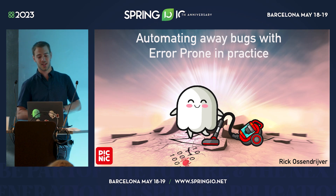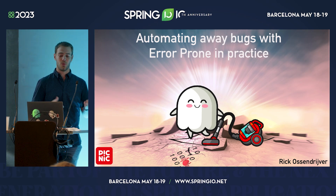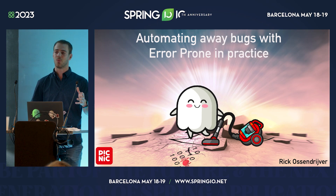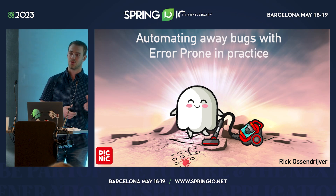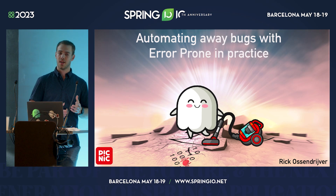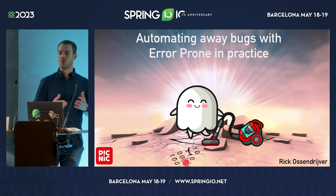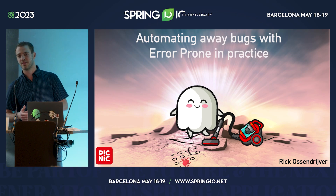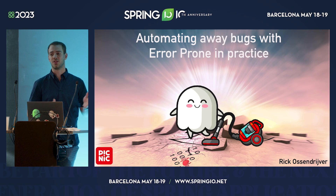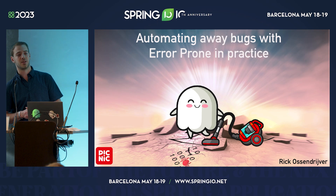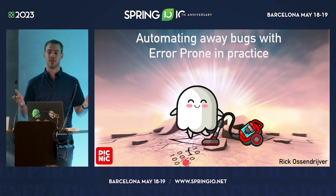The title of the talk is 'Automating Away Bugs with Error Prone in Practice,' and error-prone is the tool we're going to use. I'm a software engineer in the Java platform team at Picnic. Picnic is an online supermarket based in the Netherlands. We are active in three countries: the Netherlands, Germany, and France, and we have over three million customers spread over these countries.